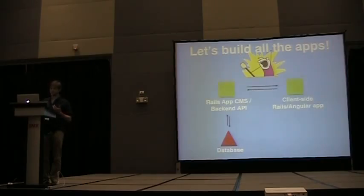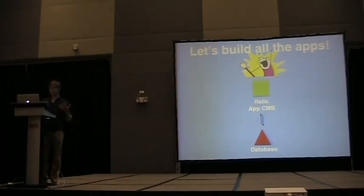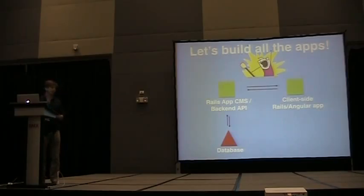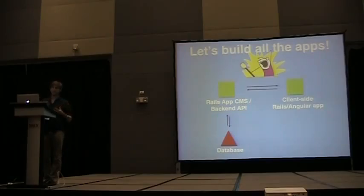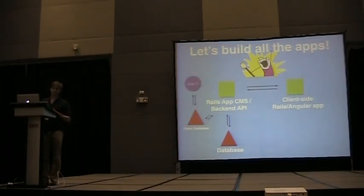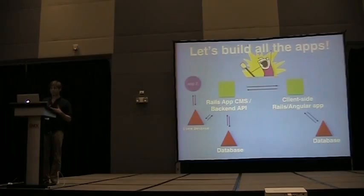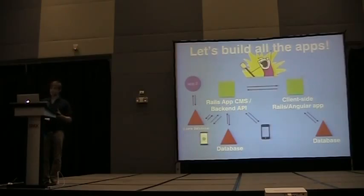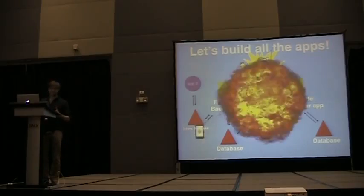I had this one project where originally I thought it was just going to be a Rails app with a single database. But we were a new team building quickly, and it soon evolved into a Rails app with a backend API. The front end got separated into its own application as a client-side Rails Angular app. There was another application that shared a user table, and the client-side Angular app had its own database to collect data in a separate process. And then we had an iPhone app, an Android app — and this just became a huge nightmare.